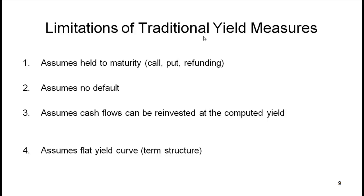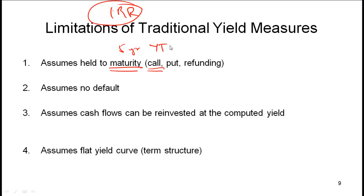The yields we have discussed so far are based on the internal rate of return method, and there are several assumptions that have gone into calculating these yields. One main assumption is that the bond will be held to maturity — or to the call date if callable. However, that is not necessarily the case, because as an investor after two years you might simply sell the bond in the secondary market, in which case your yield might differ from either the yield to maturity or the yield to first call.